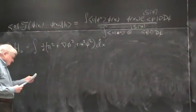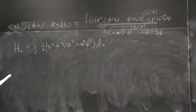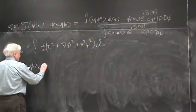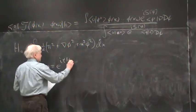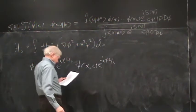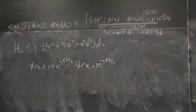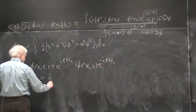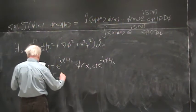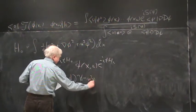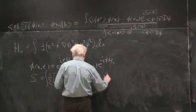That's the free Hamiltonian. And the fields with free time dependence just go as e to the i t H0, psi of x, e to the minus i t H0. The action in this case is fairly simple. It's an integral of minus d-mu phi d-mu phi minus m squared phi squared, d fourth x.